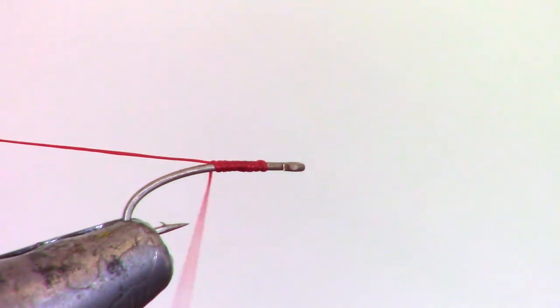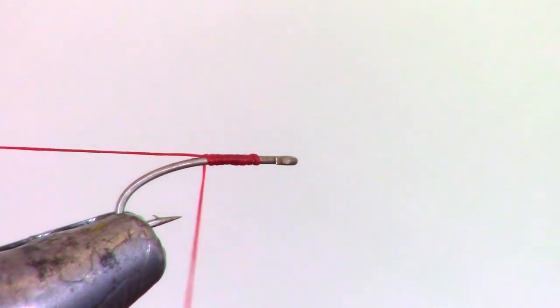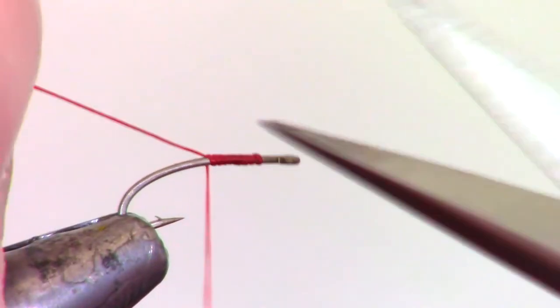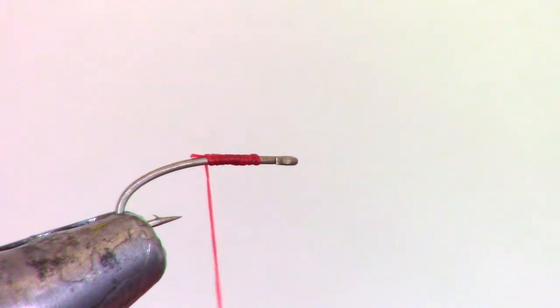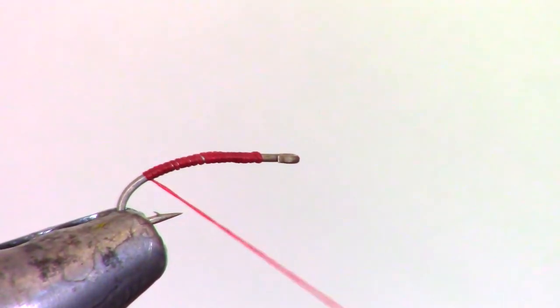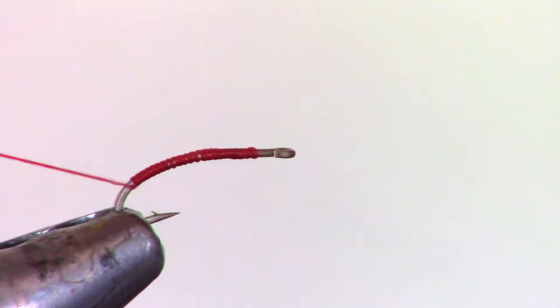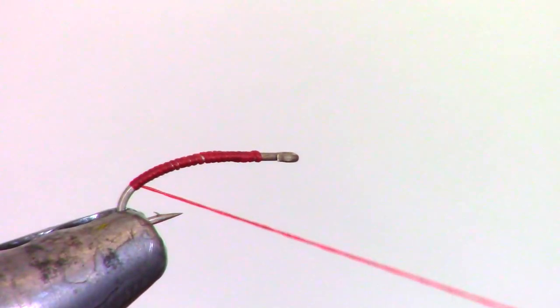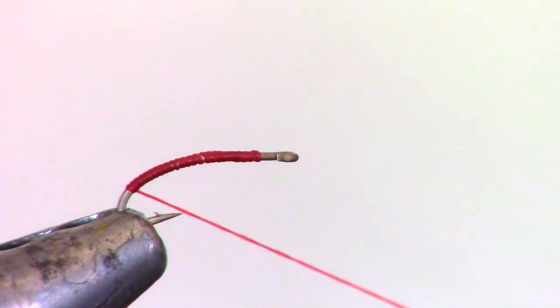Secure the thread with a few smooth and even thread wraps. Then trim up the tag end. Wrap down the hook shank and stop just shy of the sharp bend in the hook. Make sure your wraps are even and smooth.